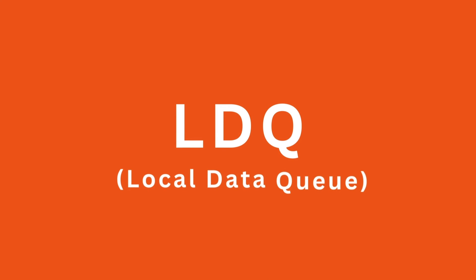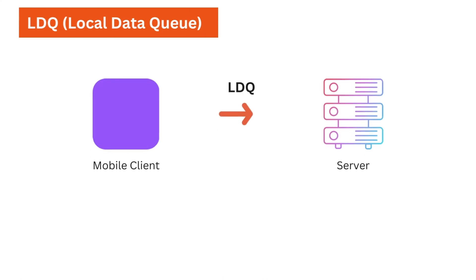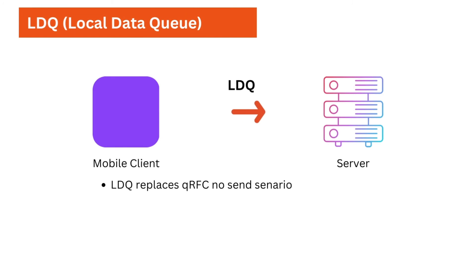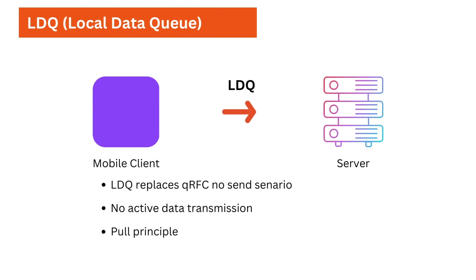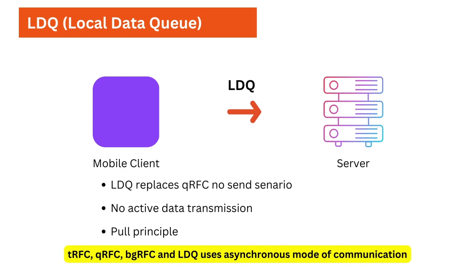The last variant is LDQ, which stands for Local Data Queue. LDQ is a special case in RFC communication — no data is sent actively by the system. Instead, it is stored locally until being called by an external application, according to the pull principle. Please note that TRFC, QRFC, BGRFC, and LDQ all use asynchronous mode of communication.